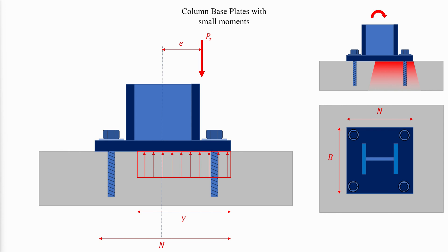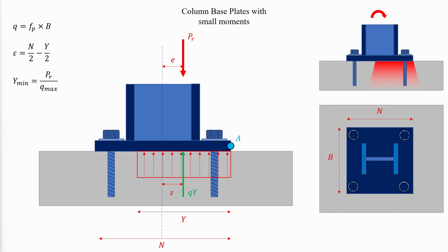Consider the following force diagram. The resultant bearing force is defined by the product QY, in which Q is the bearing stress between the plate and concrete multiplied by the width of the plate. Defining a point A on the far right of the plate, the distance of the resultant from the centerline of the plate epsilon can be calculated. As the dimension Y decreases, epsilon increases. Y will reach its smallest value when Q reaches its maximum. For moment equilibrium, the line of action of the applied load PR and that of the bearing force QY must coincide — that is, E must equal epsilon.